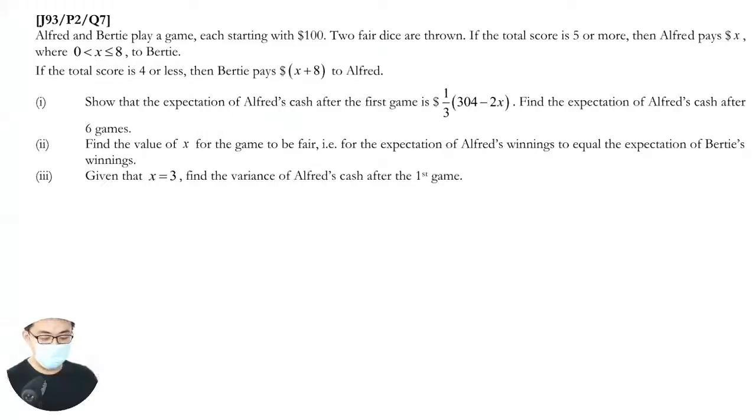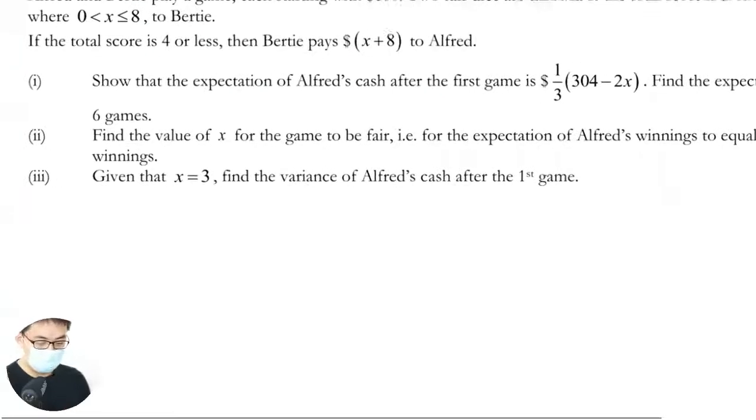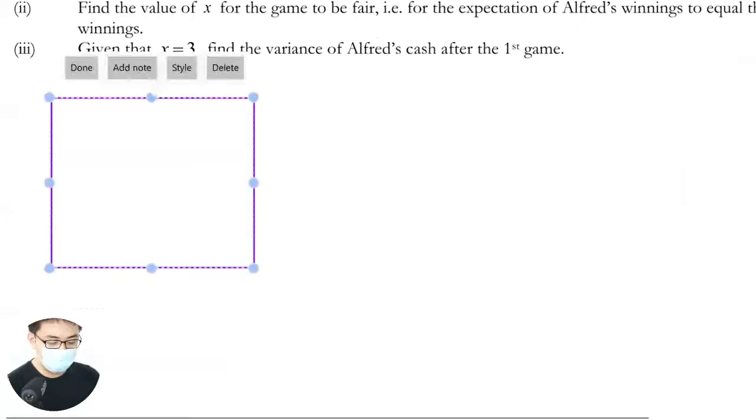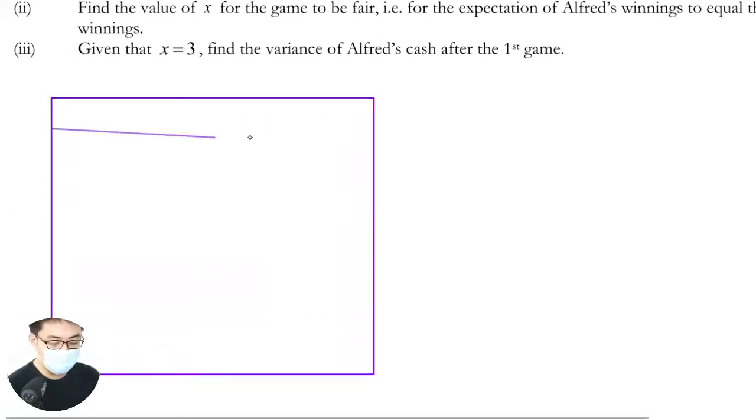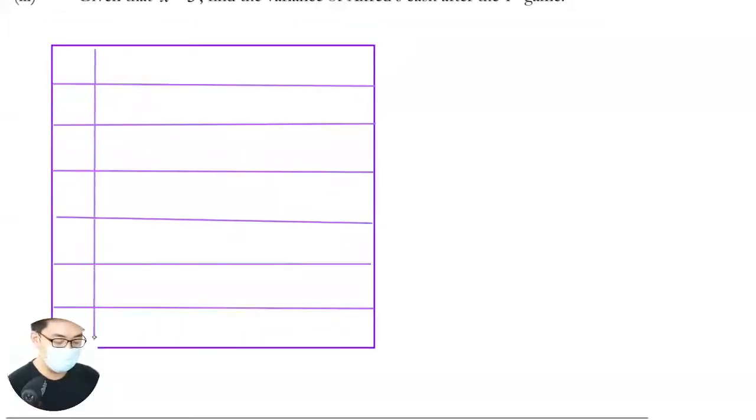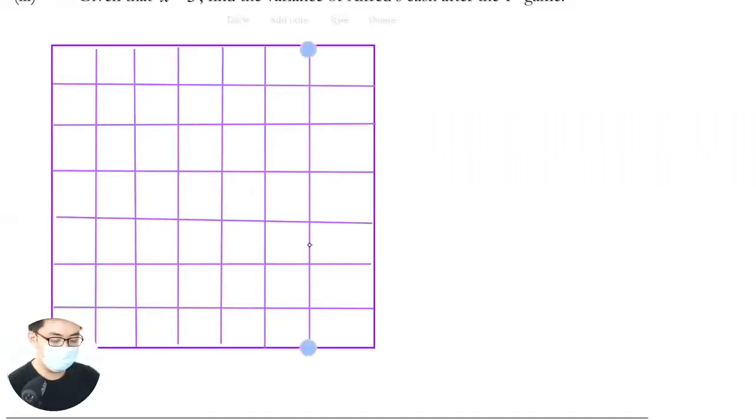Usually when two dice is involved, what you do is you just draw the diagram out. So Alfred and Bertie play the game and you're talking about the total score. So suggest just draw one, two.